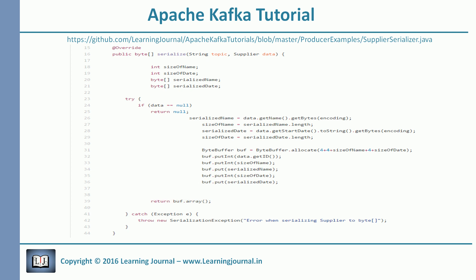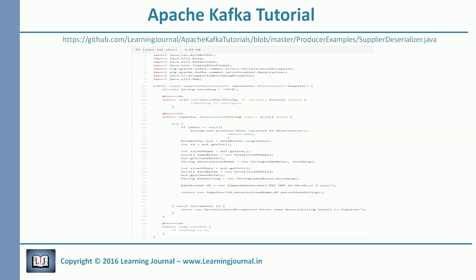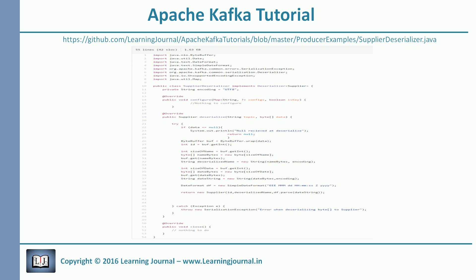That's what the serializer means: convert your object into bytes, and that's what we have done here. Next part is the deserializer. Once you understand the serializer, the deserializer is simple. Let's look at the code for the deserializer. We are doing the opposite of what we did in the serializer. We deserialize every field, create a new supplier object, and return it. That's what deserializer means: take a byte array and convert it into an object.